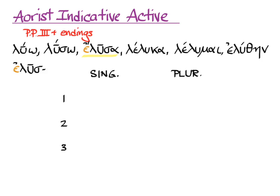Now we need the endings and a chart to put them in, singular and plural, first, second, and third person. Here are the endings of the singular: alpha, as, e, and the third singular can also have a nu movable. And here are the endings in the plural: amen, ate, an.